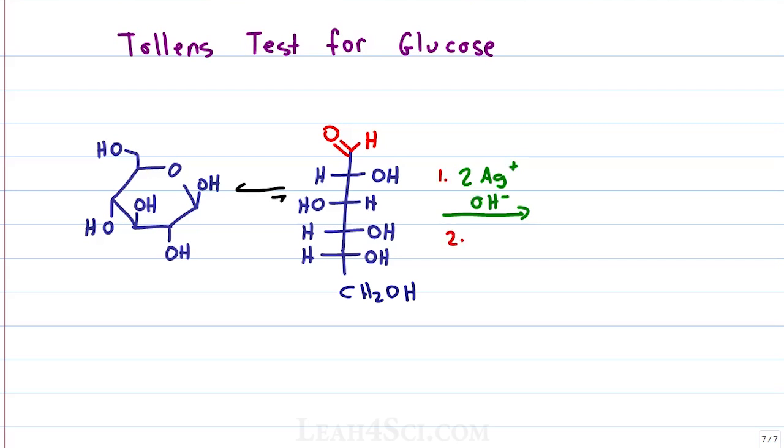If I react this with a Tollens reagent which we'll just show as the 2 Ag plus and OH minus followed by an acid workup, our product once again will be a carboxylic acid as well as 2 solid silver molecules precipitating out of solution.